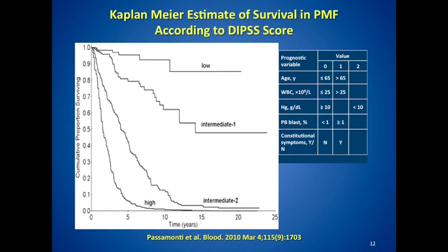Treatment is tailor-made to your risk factors. Patients who are intermediate-2 or higher should be given serious consideration for allogeneic stem cell transplantation. Also important is the patient's age — those with low-risk or intermediate-1 disease may not require disease treatment immediately, but if you're 30 years old, we're really thinking about what will happen when you're 50 or 60.